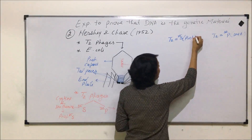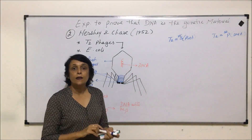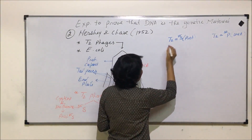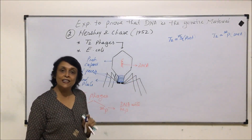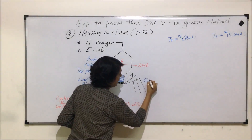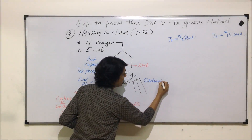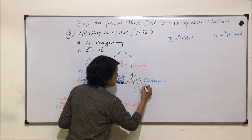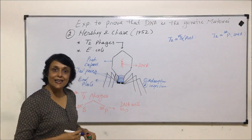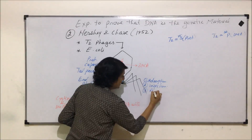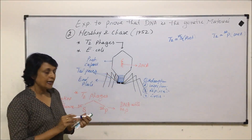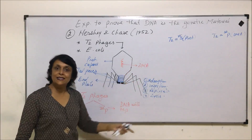Now they made these T2 phages infect E. coli in normal medium. When we talk about bacteriophages infecting E. coli, the steps are very simple. The first step is adsorption — that means the phage attaches to the E. coli. Second is injection or introduction of the DNA into the host. Then replication. And fourth is lysis of the host cell. The same thing would happen in these situations also.